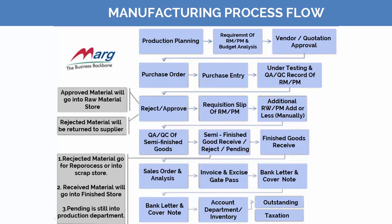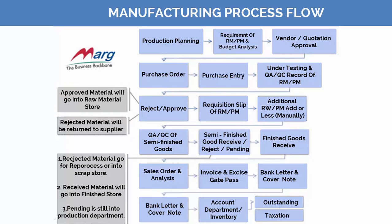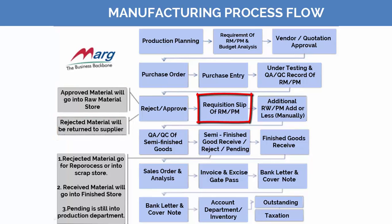After purchase entry we have two options: whether you want the purchased materials to go under testing or not for quality check. After stock goes through testing, it will either get approved or disapproved. If approved, it will be transferred to the store; if rejected, it goes back to the supplier. After that, a requisition slip of raw materials and production material is generated to be transferred from the store to the production department.